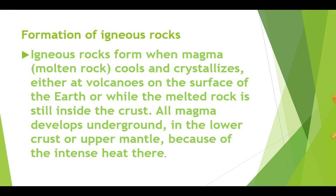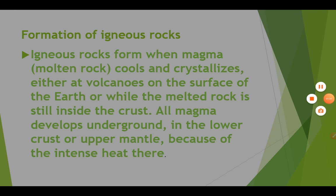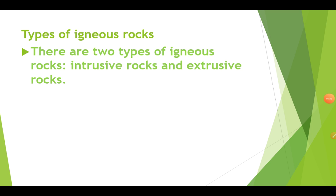All magma develops underground in the lower crust or upper mantle because of the intense heat there. So this is how igneous rocks are formed. There are two types of igneous rocks: intrusive rocks and extrusive rocks.